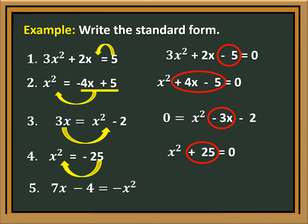7x minus 4 is equal to negative x squared. Let us transpose negative x squared to the left side of the equation, so it will become positive x squared. We will have x squared plus 7x minus 4 is equal to 0.